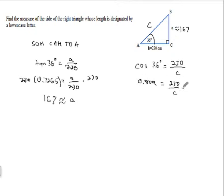Need to solve for C. I'll multiply both sides by C to get rid of my fraction. So, 0.809C is equal to 230. Divide each side by 0.809.